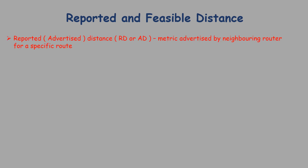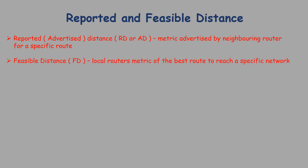Reported distance (or advertised distance) is the metric advertised by a neighboring router for a specific route — the metric that neighbor uses to reach a particular destination network. Feasible distance is the local router's metric for the best route to reach a specific network, calculated as the metric reported by the neighbor plus the metric to reach that neighbor. The route with the lowest feasible distance is placed in the routing table.